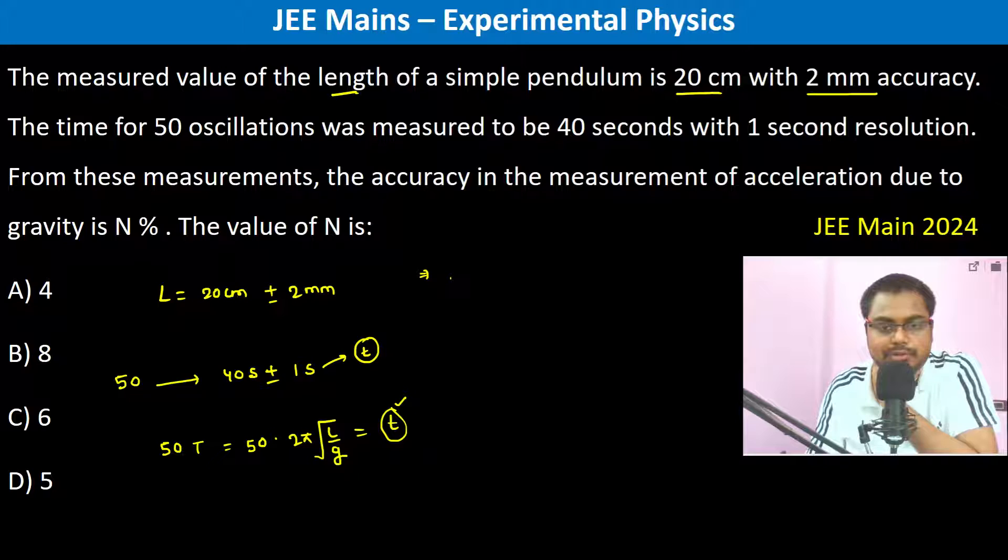Therefore we have ln into 50 into 2 pi plus half ln l minus half ln g is equal to ln t.